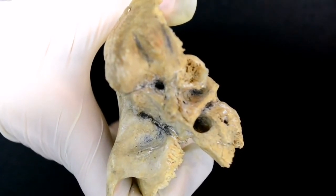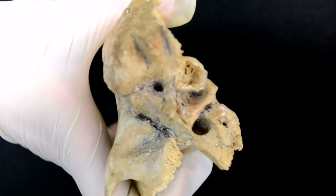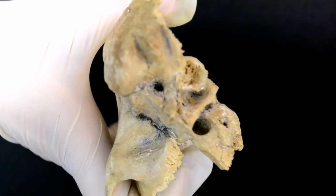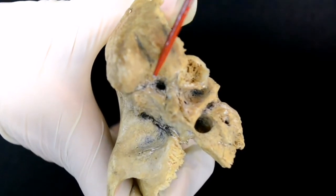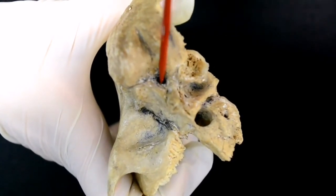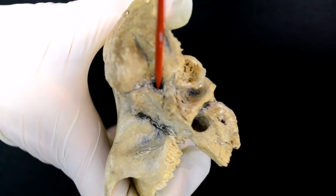It goes backward to the level of eminentia arcuata, then turns downward and opens as foramen stylomastoideum.